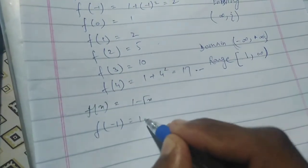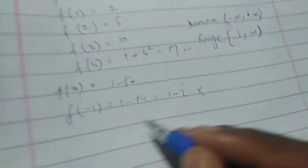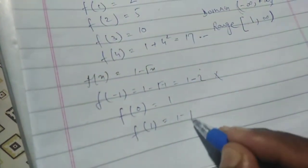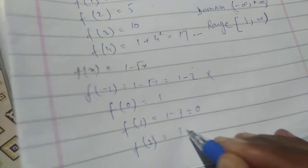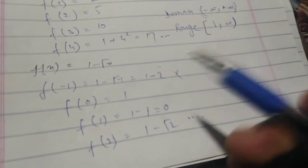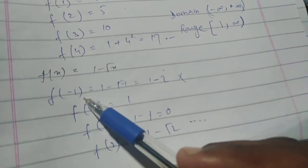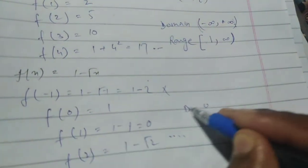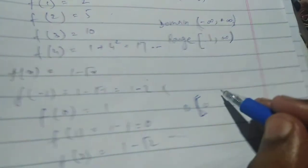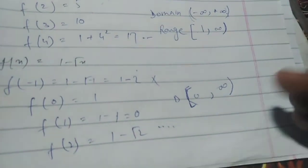Now for question number two, f(x) = 1 − √x. If we put x = −1, we get 1 minus the square root of a negative number, which does not exist. If we put x = 0, we get f(0) = 1 − 0 = 1. If we put x = 1, we get 1 − 1 = 0. This means you cannot put a negative value — any value less than zero gives an imaginary answer. So the domain starts from zero. Since zero is included, the domain is [0, +∞).